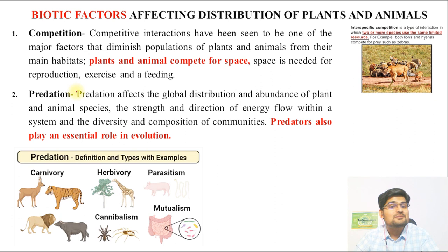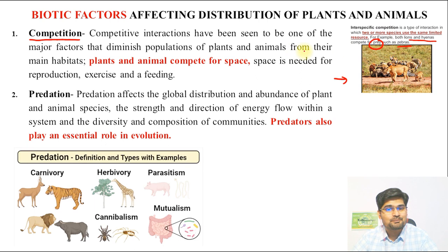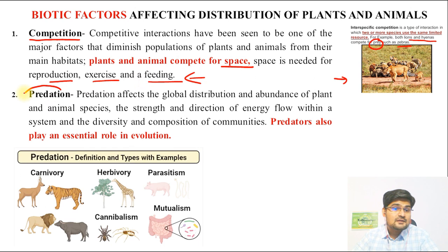Now for biotic factors — the living factors affecting the distribution of plants and animals. The first is competition. Species compete with each other through interspecific competition; for example, lions and hyenas compete for prey such as zebra. Plants and animals also compete for space, which is necessary for reproduction, feeding, and the maintenance of life. Competition is therefore one of the most important biotic factors.